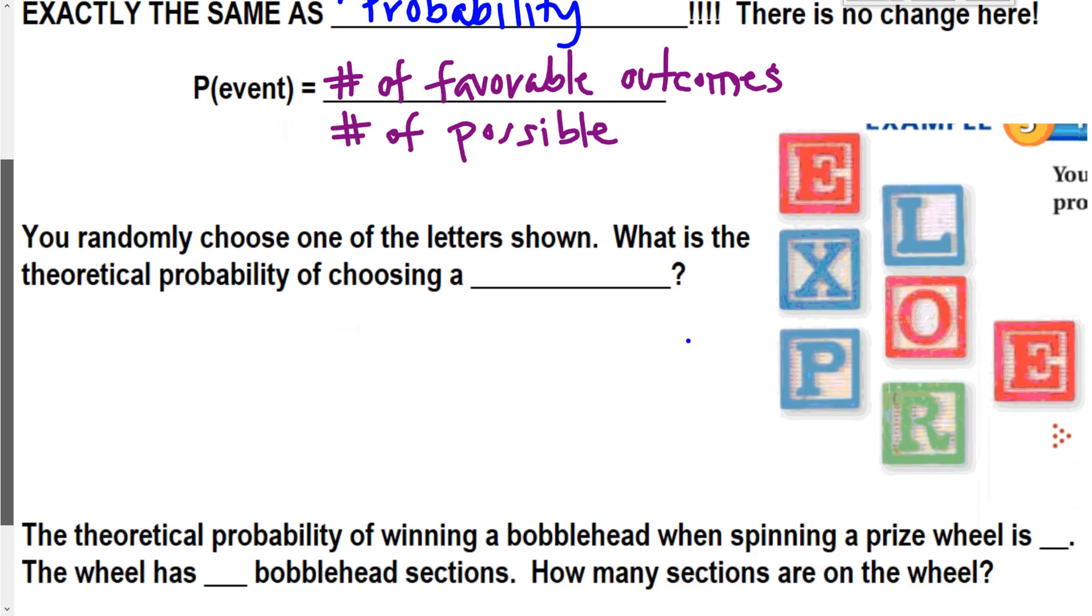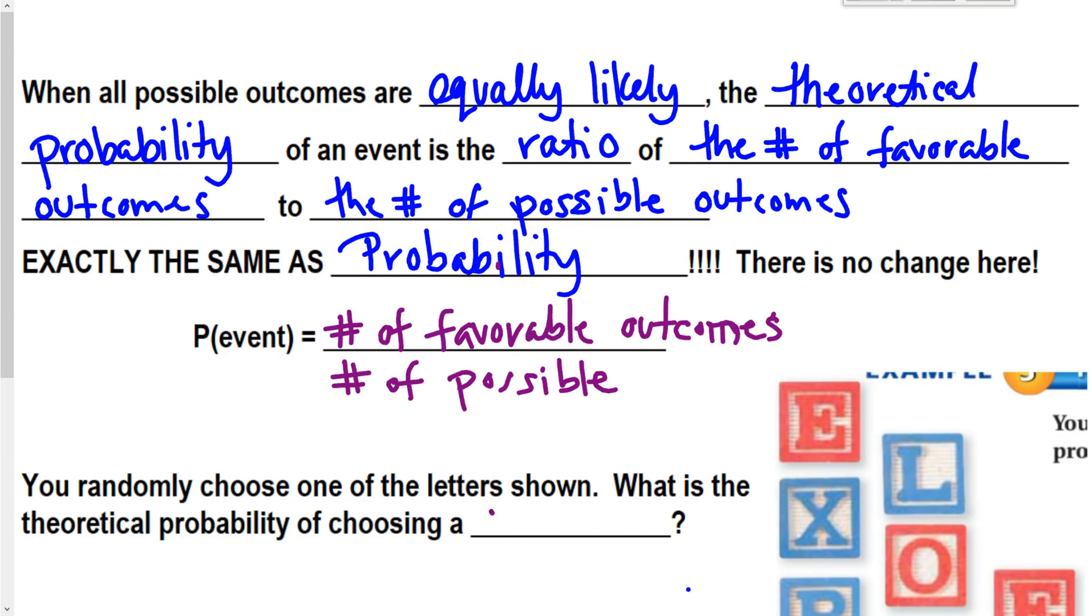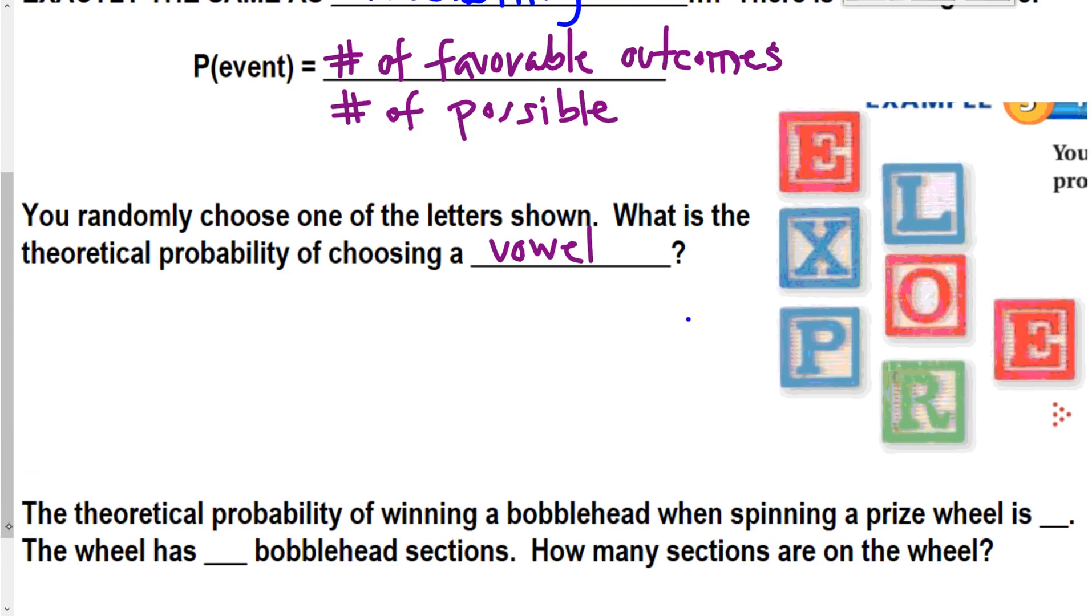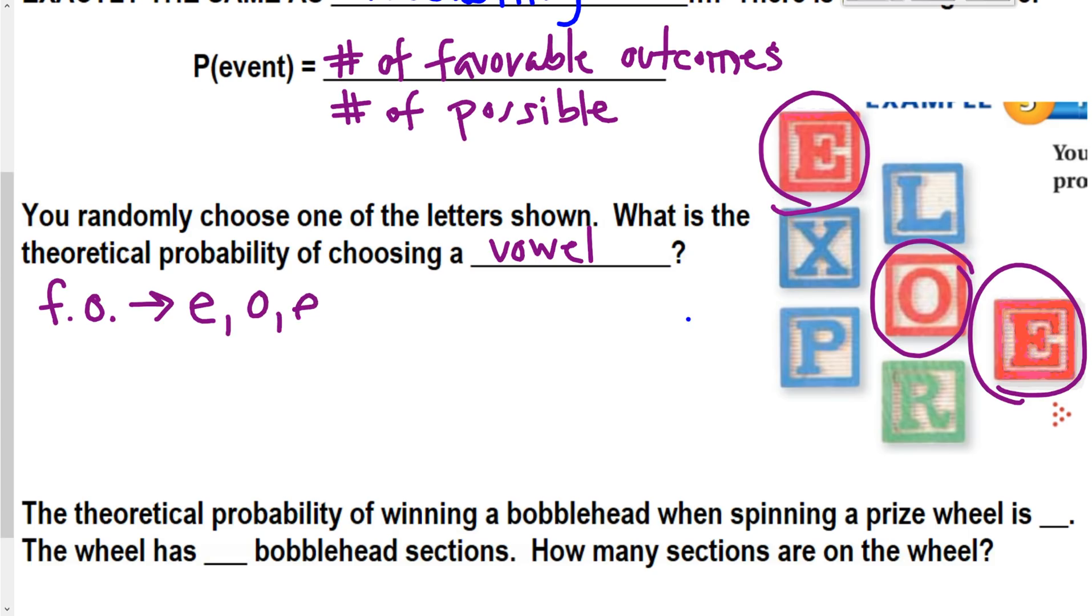So, let's look at an example. You randomly choose one of the letters shown. What is the theoretical probability of choosing a vowel? So first, what are my favorable outcomes? What are all my vowels? I have in here, here are all my vowels. I have an E, an O, and I do have a second E, and I'm going to count that E twice because there are two of them in those blocks. So I could pick either E.